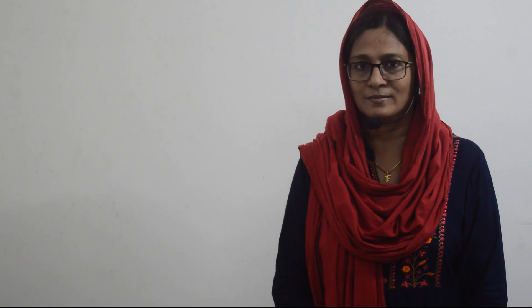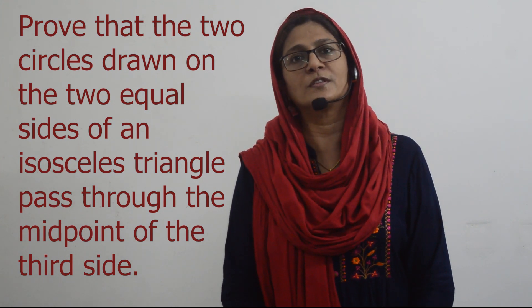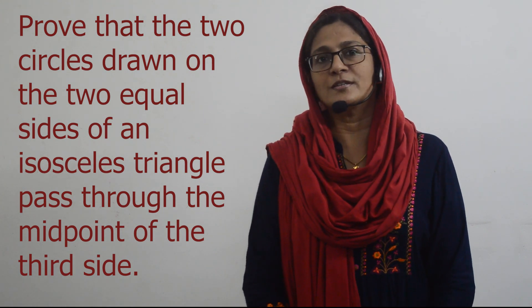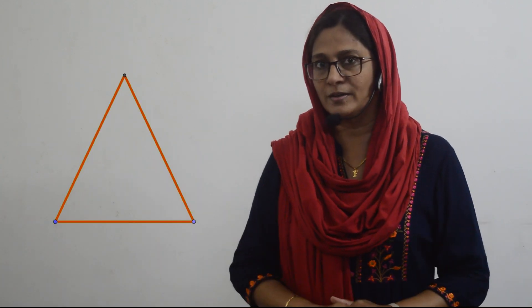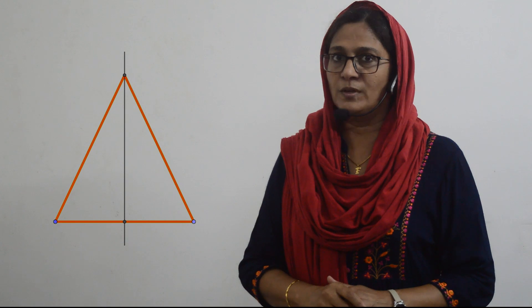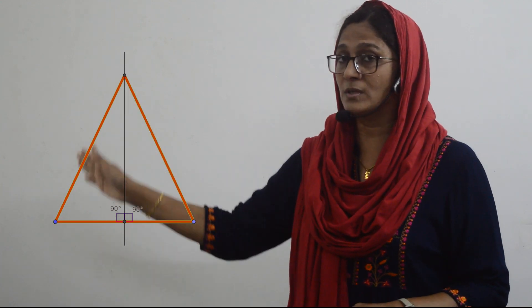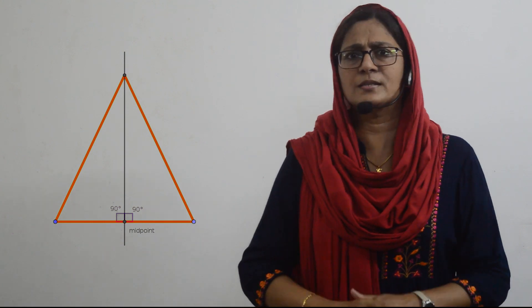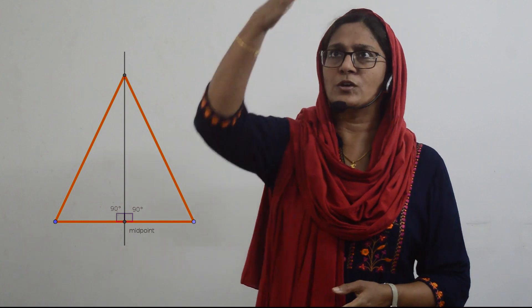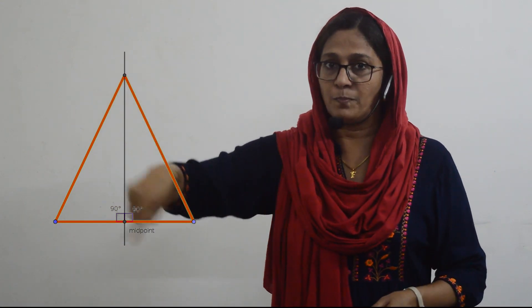Let us see another question: prove that the two circles drawn on the two equal sides of an isosceles triangle as diameters pass through the midpoint of the third side. An isosceles triangle has two equal sides. The perpendicular bisector from the third vertex forms right angles on the base and also passes through the midpoint of the third side. We have to prove that a circle drawn with one of the equal sides as diameter will pass through that midpoint.